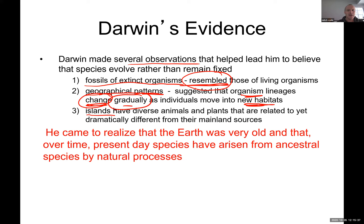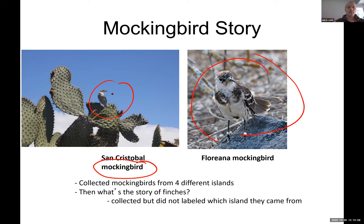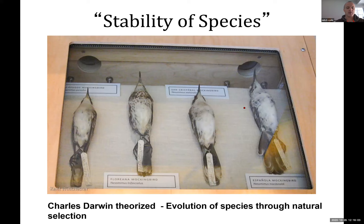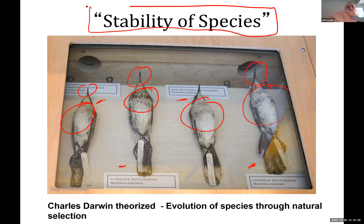Third, he noticed on Galápagos that islands have diverse animals and plants related to the mainland but not the same. He noticed this by looking at mockingbirds — on San Cristóbal, Floreana, Isabela, and Española they kind of look the same but are a little bit different, even the beak. He theorized that species are not very stable, and as they move from one habitat to another they start changing — evolution starts through natural selection.